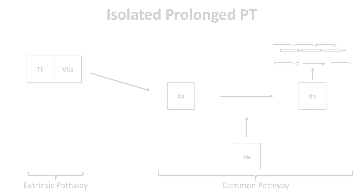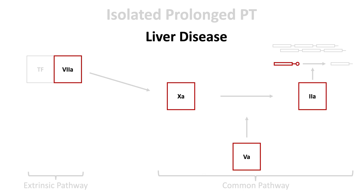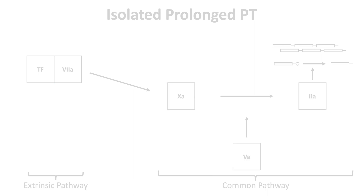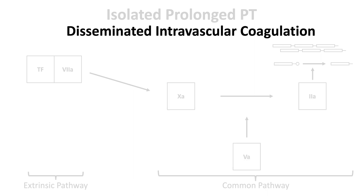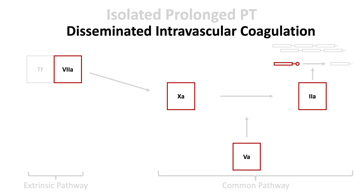Another cause of a prolonged PT is liver disease, which affects all extrinsic and common pathway factors. Although liver disease prolongs both the PT and APTT, mild liver disease may initially prolong the PT alone. Similarly, disseminated intravascular coagulation consumes all coagulation factors, prolonging both the PT and APTT. However, early DIC may prolong the PT alone.